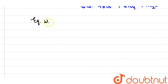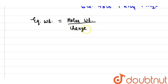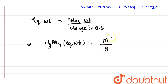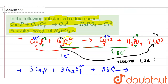Now we calculate the equivalent weight of H₃PO₄. As we know, equivalent weight equals molar weight divided by the change in oxidation state. For H₃PO₄, the change in oxidation state is 8, so the equivalent weight of H₃PO₄ is M/8.